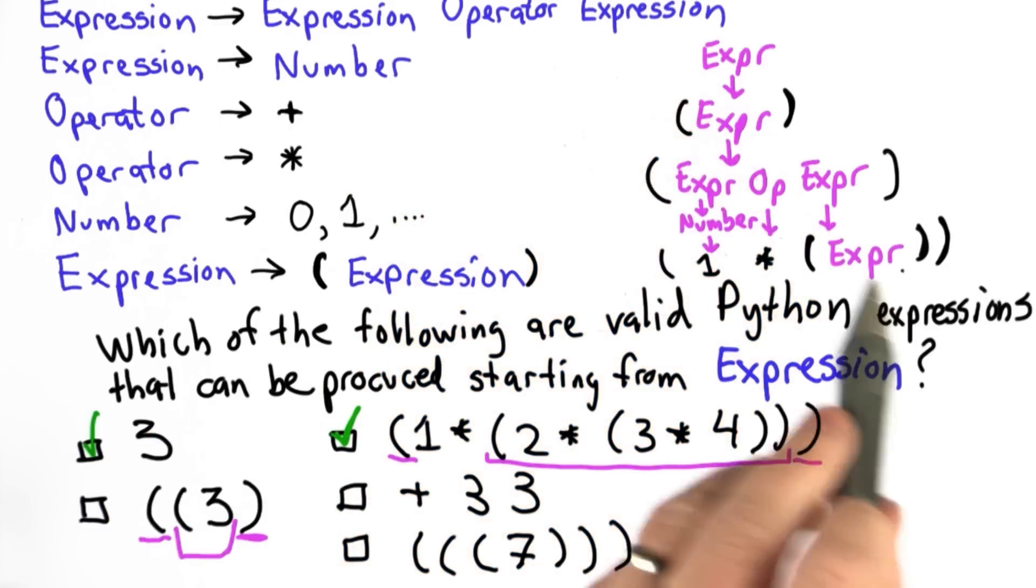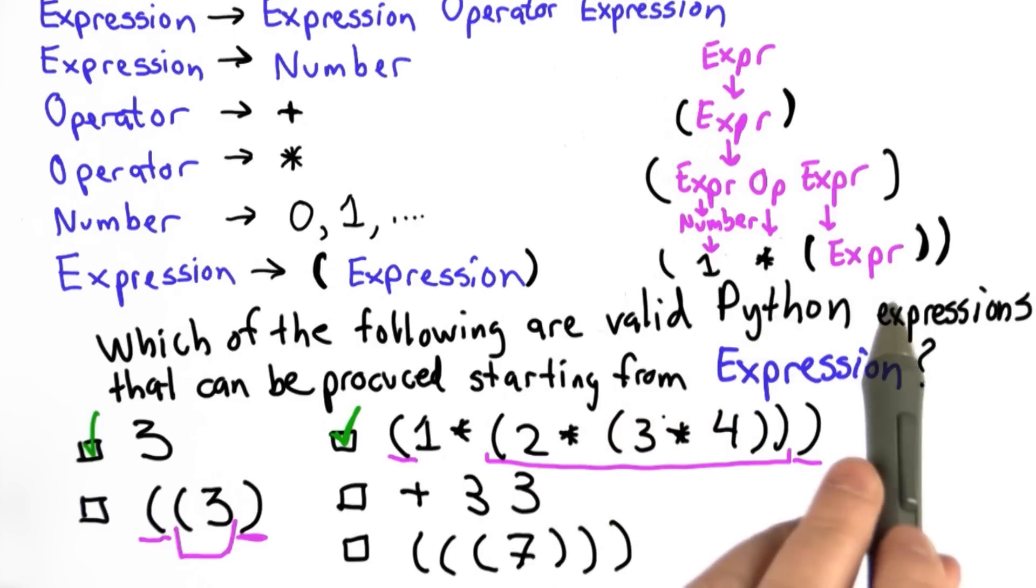We're going to replace this expression with expression operator expression. Eventually get the two times and then do that replacement with parens again to get the three times four. I'm not going to fill in all the steps here because they won't fit on the screen, but I hope you get the basic idea that we can keep doing these replacements, making complex expressions like this one.